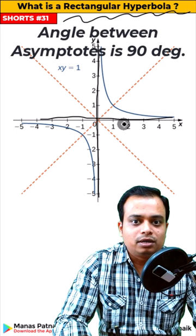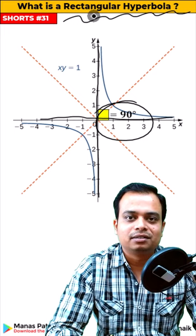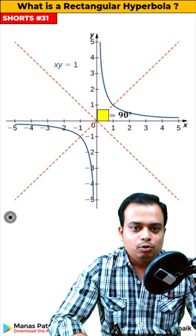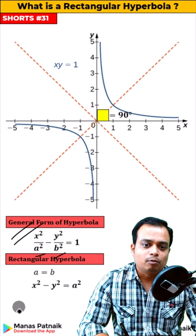So if it is equal to 90 degrees, always remember it is a special hyperbola called a rectangular hyperbola. Thirdly, there is a bit of math involved. You already know this equation, the general form. So when a equals b, what you have is a special or a rectangular hyperbola.